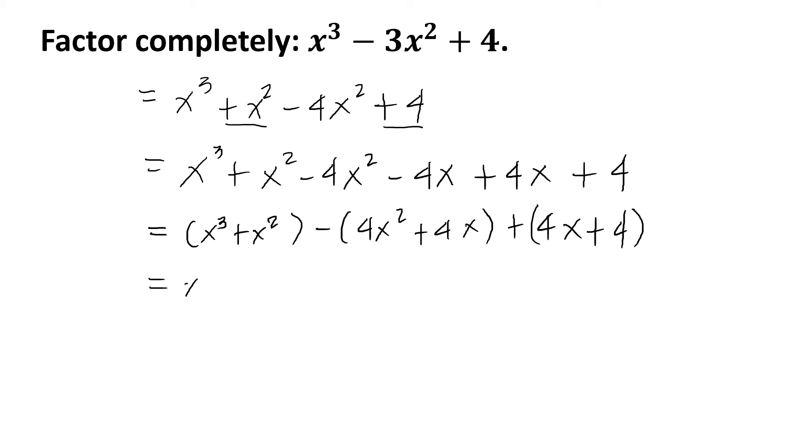In the first group we have x² times (x + 1). In the second group, we have 4x. So that's -4x times the quantity (x + 1). In the last group, we have 4. So we have 4 times (x + 1).